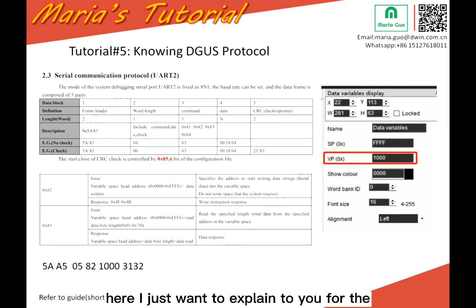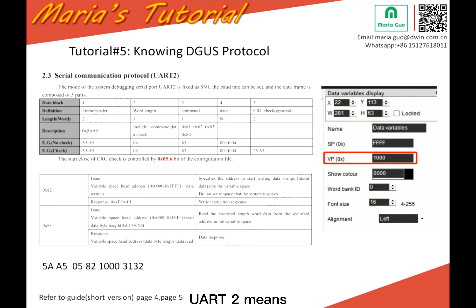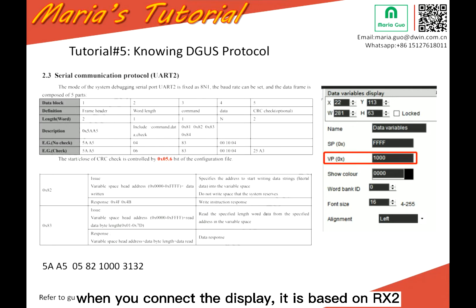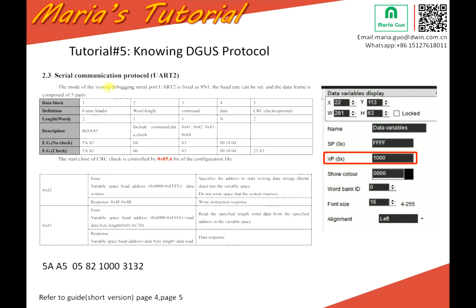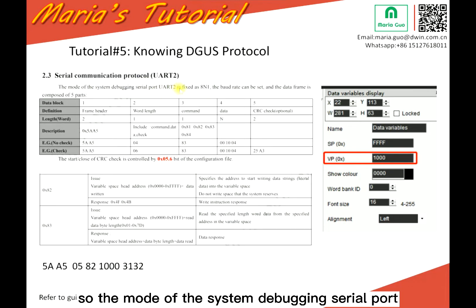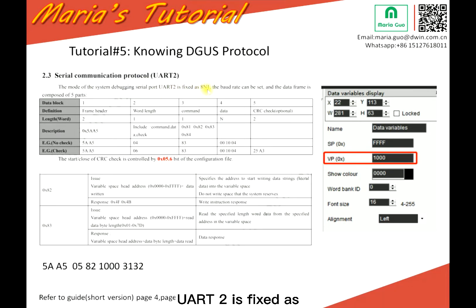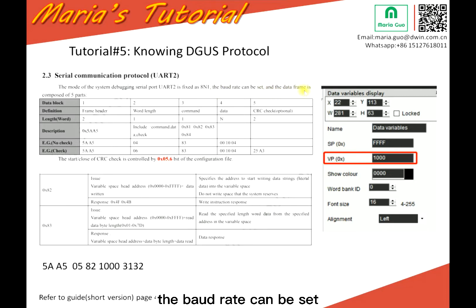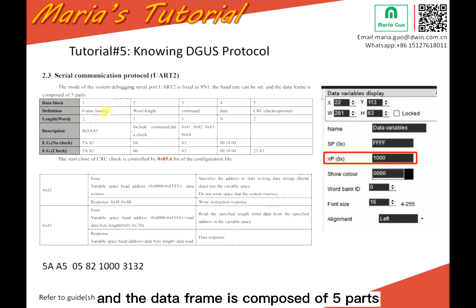Here I just want to explain to you the protocol based on UART2. UART2 means when you connect the display it is based on RX2, TX2 like this. So here this is the explanation for this. The mode of the system debugging serial port UART2 is fixed as 8N1. The baud rate can be set and the data frame is composed of file paths.